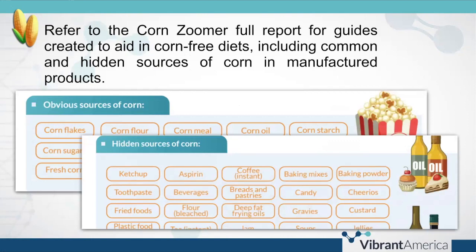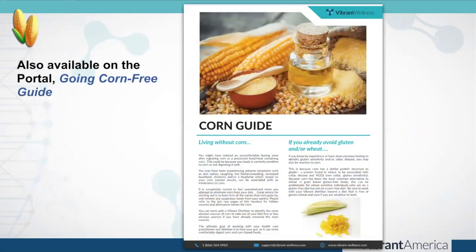On the full version of the report, I would encourage you to pull that up and check out the list of foods to avoid and hidden sources of corn. These are helpful for the patient, especially during a consult, to give guidance about what to avoid and what foods might have corn hidden in them. Corn is probably just as ubiquitous as wheat in the American diet as far as everything it's used in and its hidden sources. There's also a guide with similar information available for download on the education portal where you can access additional references.